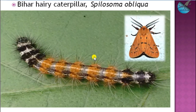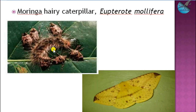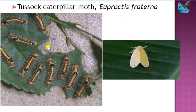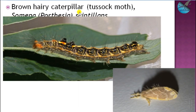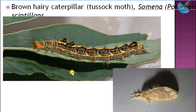The next pest is the Bihar hairy caterpillar, Spilosoma obliqua, which defoliates in the same way as previous defoliators. Where moringa plantation is nearby, there can be a problem with the moringa hairy caterpillar, Eupterote mollifera. Another hairy caterpillar is the tussock caterpillar from the same genus Euproctis, with species fraterna. There is also the brown hairy caterpillar, also called the tussock moth. All these hairy caterpillars come in bulk, marching to the mulberry plantation in groups and feeding heavily.